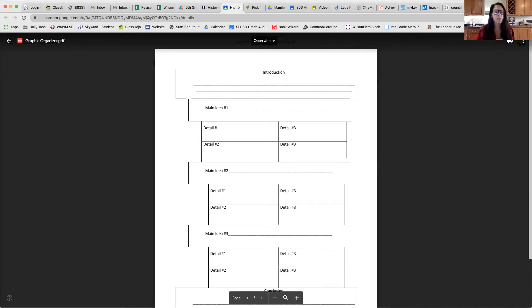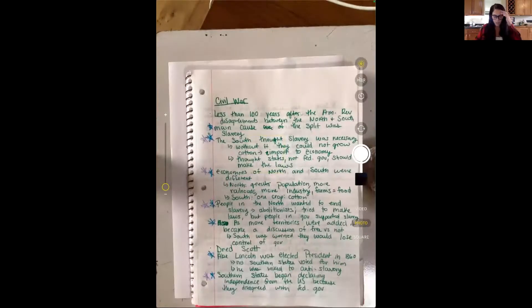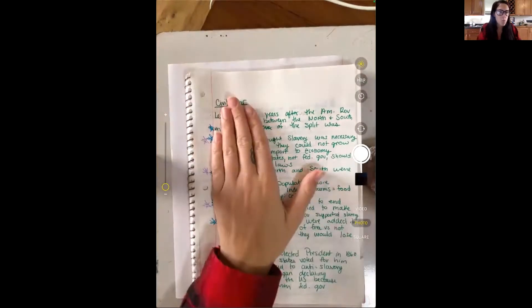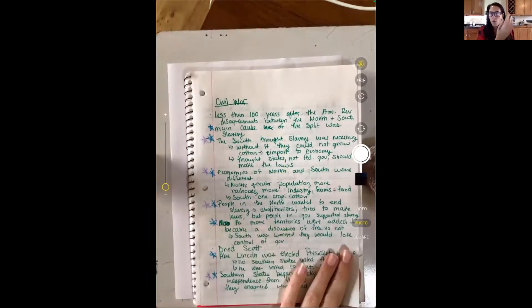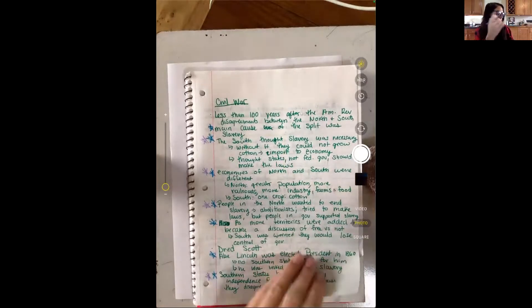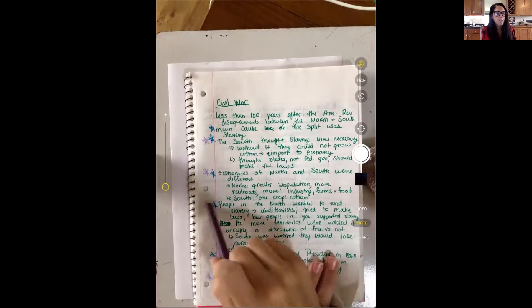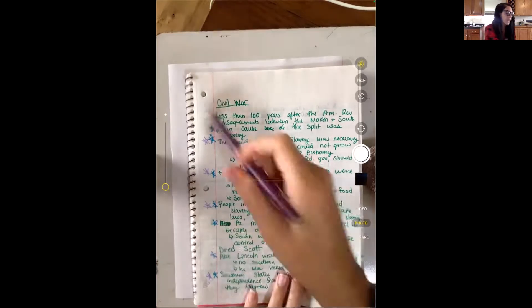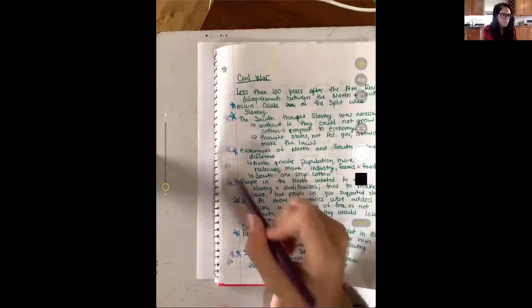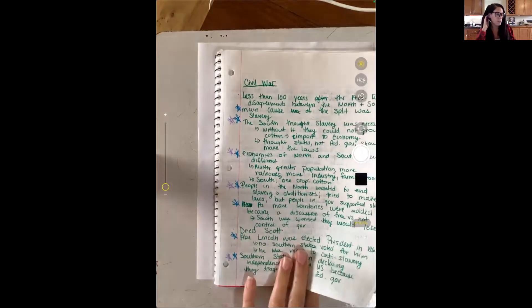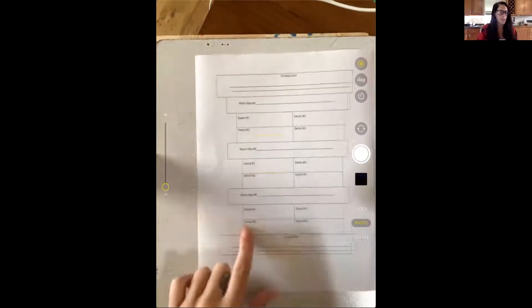So yesterday you were supposed to take your notes that you did. Remember, I'm doing the Civil War for my topic and you were supposed to think about and organize them into different categories. So I used just stars. And as I was going, I realized that some of them kind of were a different category. Remember you want to have three categories because we need to have three main ideas.